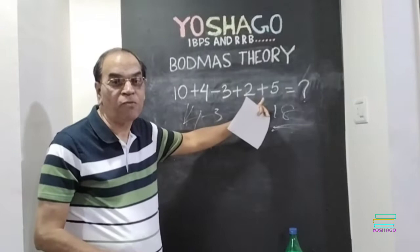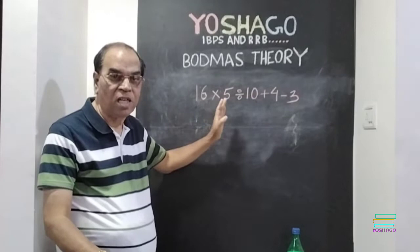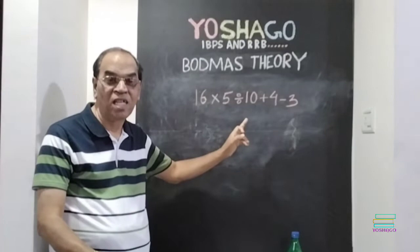Now, one more problem. Friends, here you see, multiplication is there, division is there, addition is there and subtraction is also there. No bracket, no bracket, no of. But still, here, easily you can attempt.